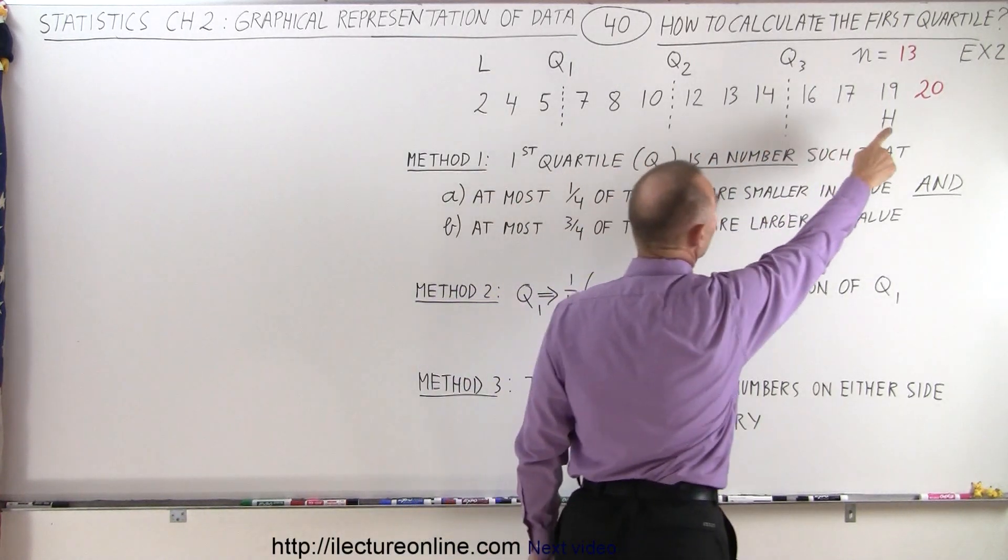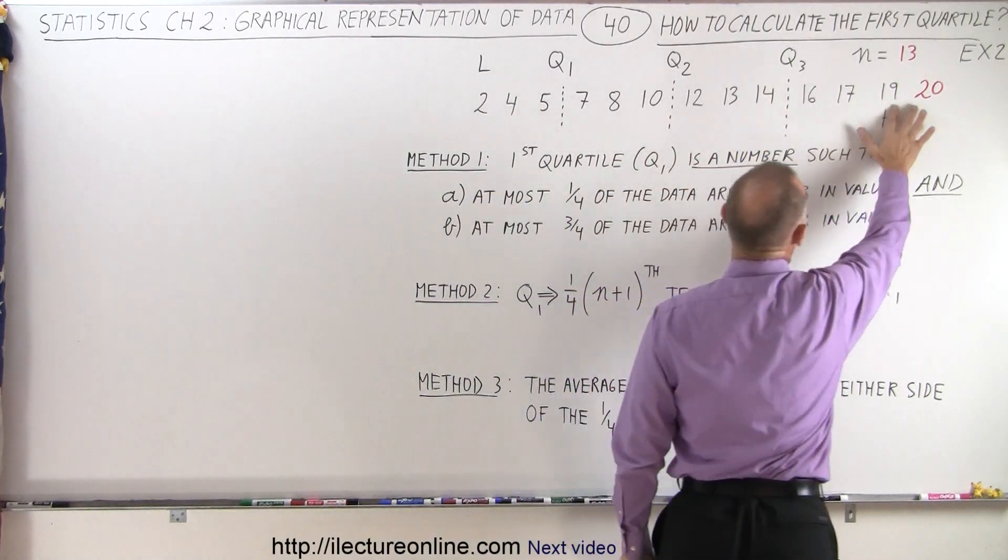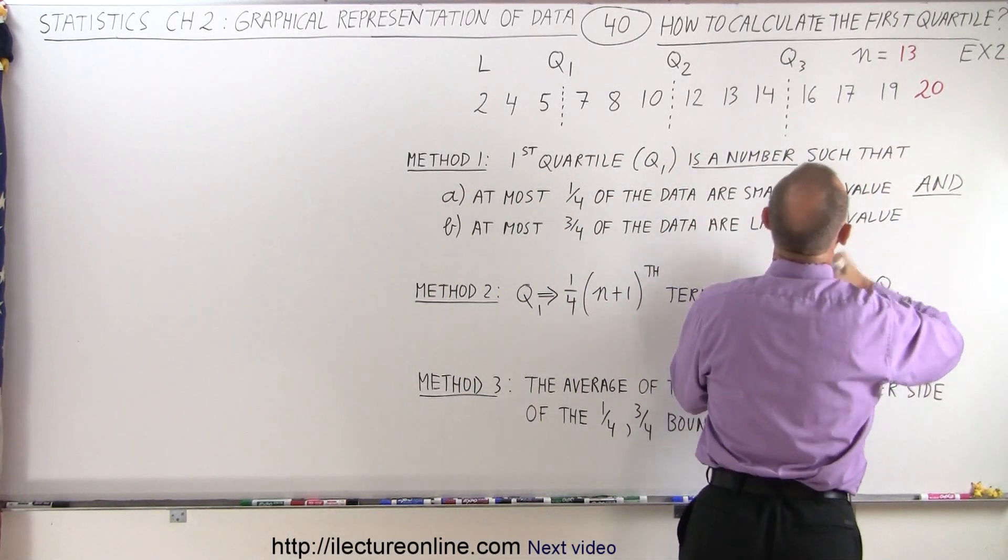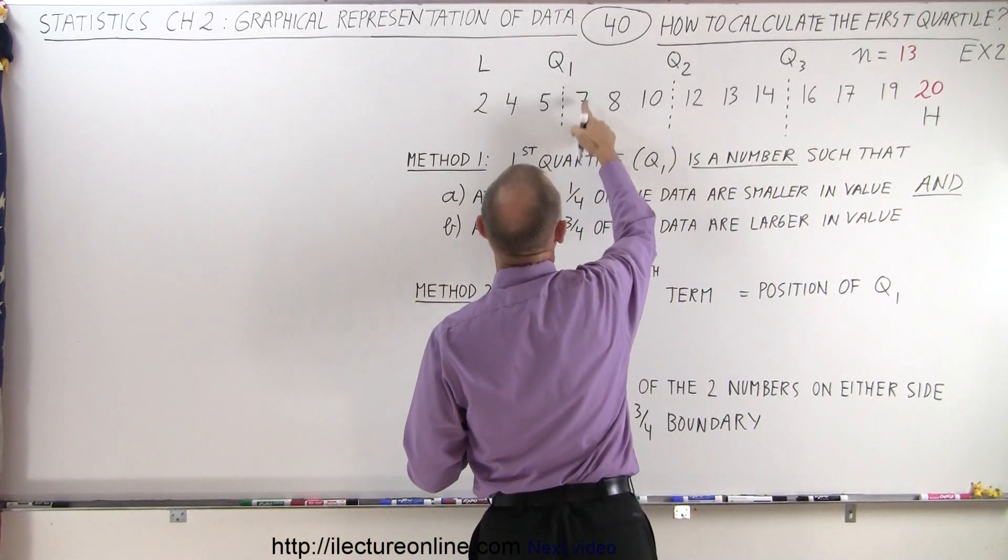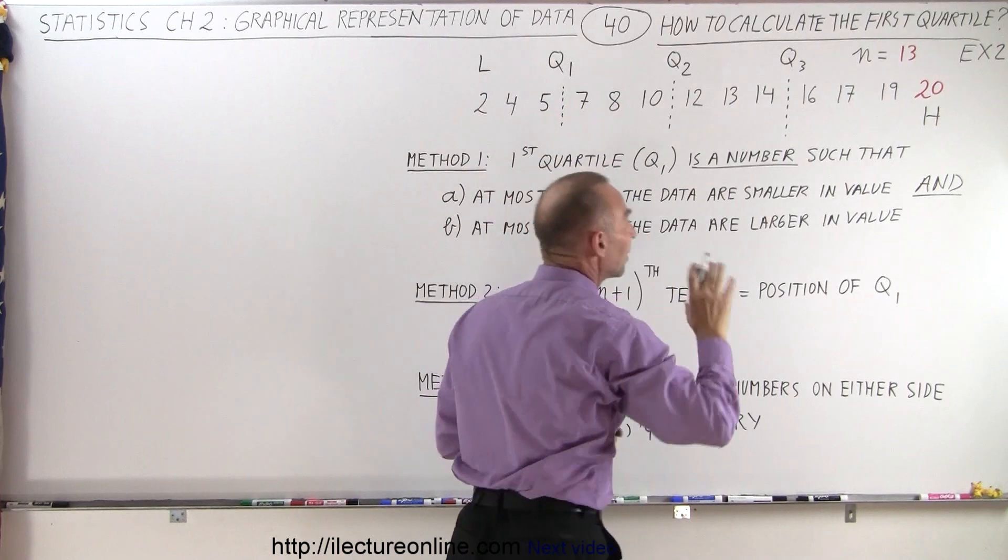We've added one more data point in our data set and therefore now our n value falls over here, and our first quartile range still is in this particular region.